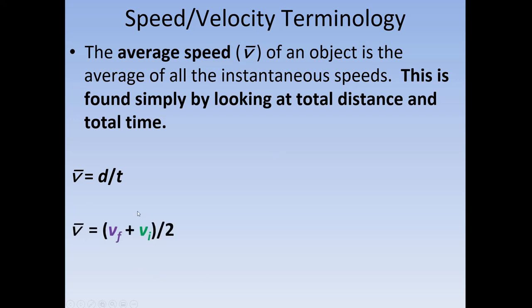There's a second equation — not on the reference table, so you need to memorize it. It represents average speed as the average of initial and final speeds: V-bar equals (VF + VI) divided by 2. It works the same way you'd average two test scores — add them up and divide by two. VF is your final velocity, VI is your initial velocity, and V with a bar above it is your average velocity.